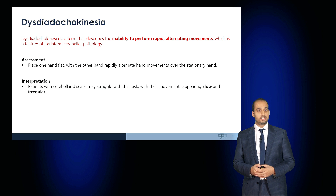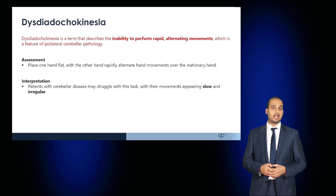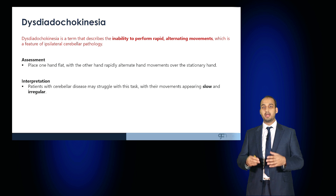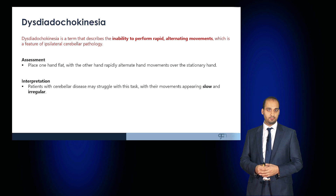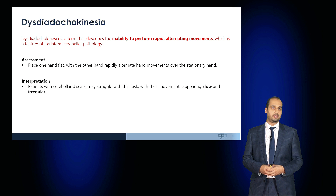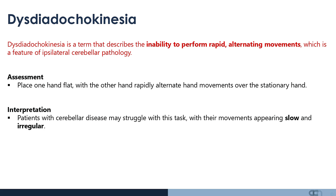Another form of testing coordination is dysdiadochokinesia — the inability to perform rapidly alternating movements, also a feature of ipsilateral cerebellar pathology. Ask the patient to place one hand flat and rapidly alternate hand movements with the other hand. If the patient is unable to do this, or the movements are slow or irregular, this may indicate dysdiadochokinesia.